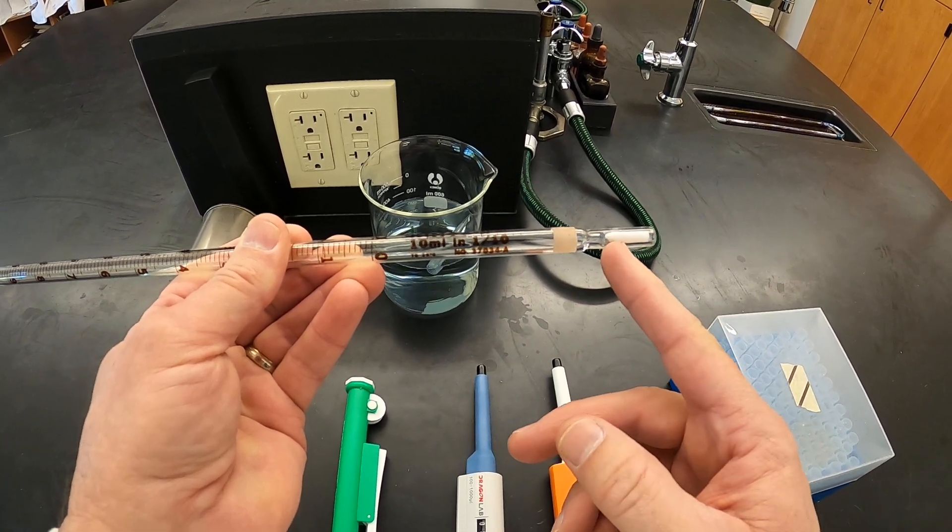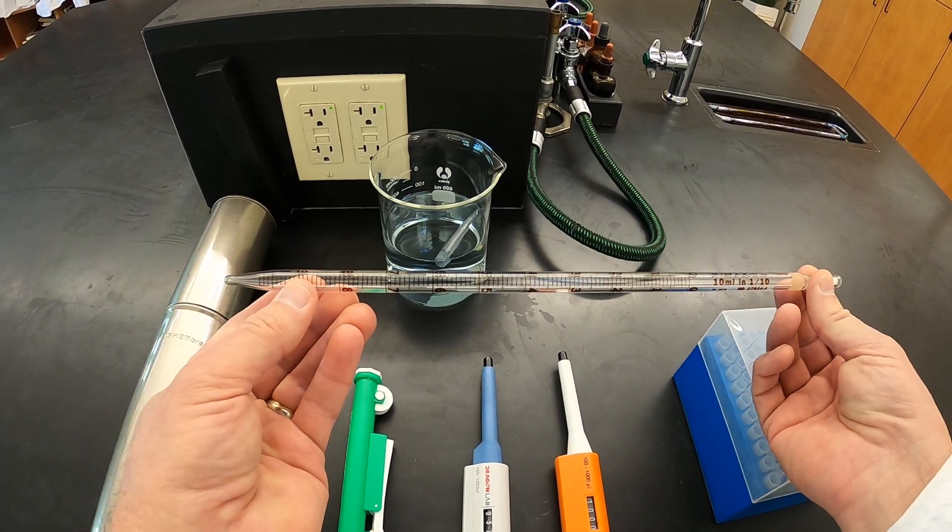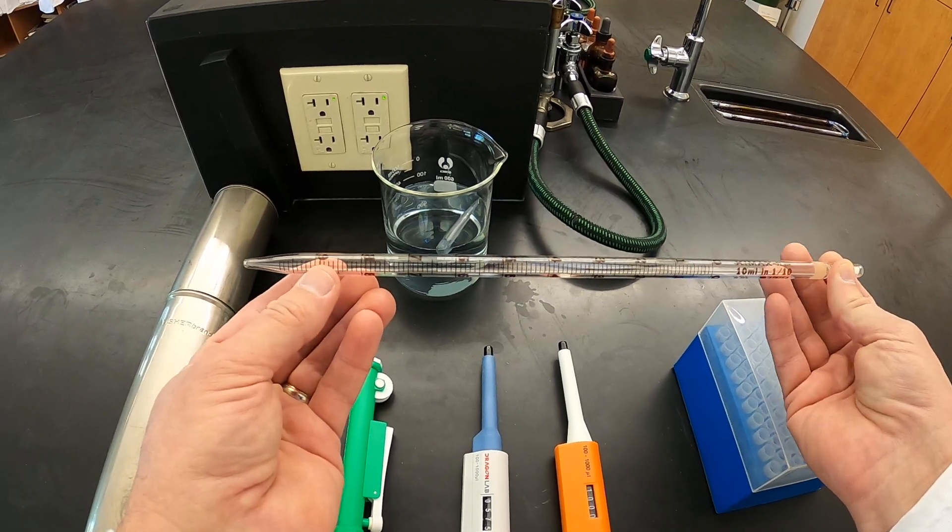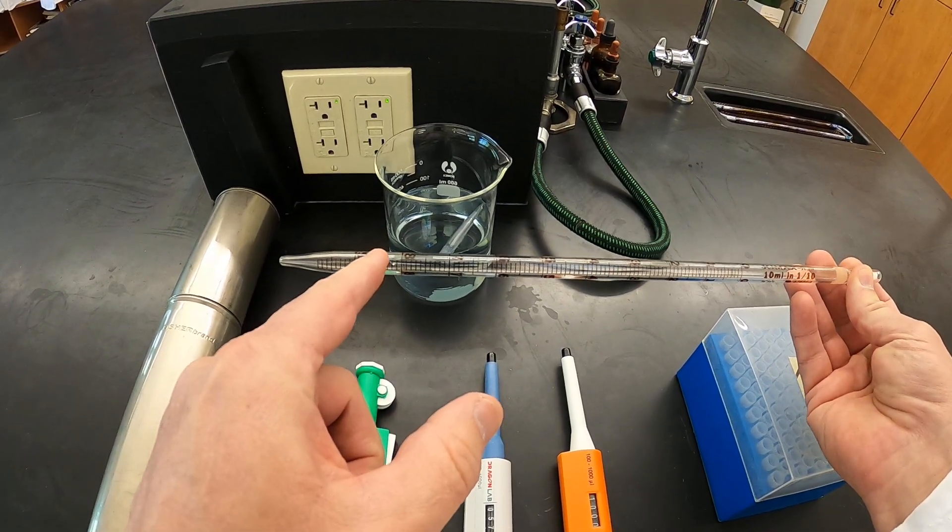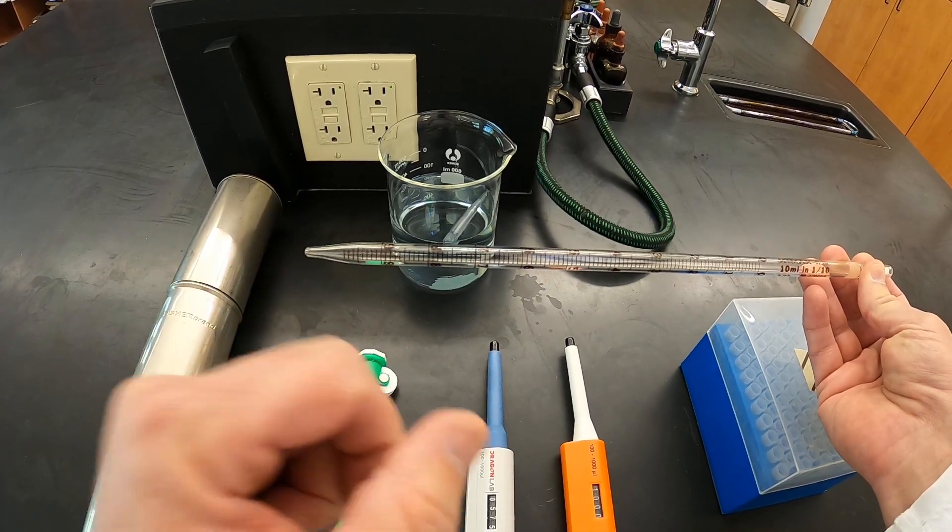The etched band here is an indicator that this particular pipette is what is called a serological pipette, or otherwise known as a blowout pipette, because in order to get the accurate volume we're blowing out all of the liquid all the way out of the pipette.